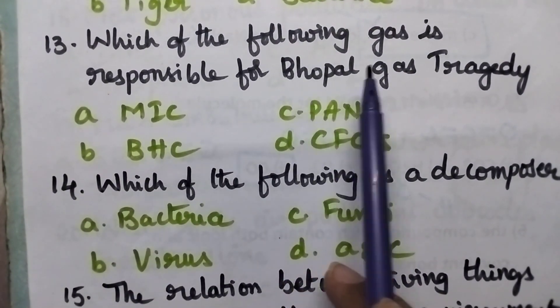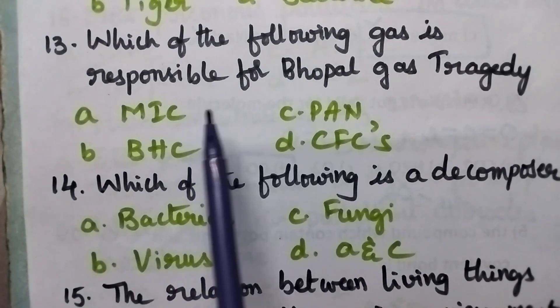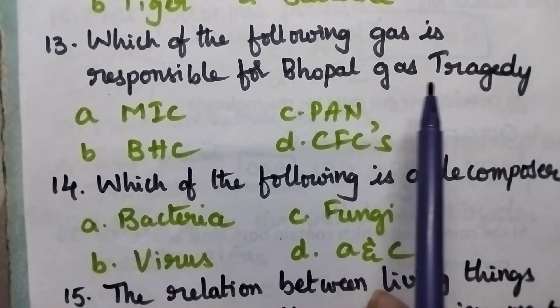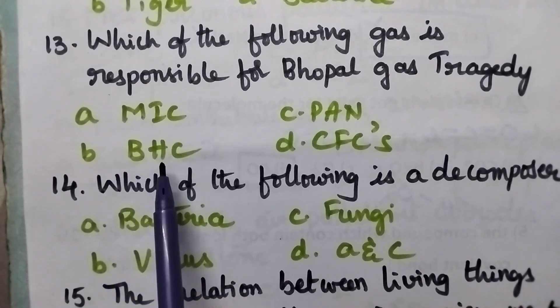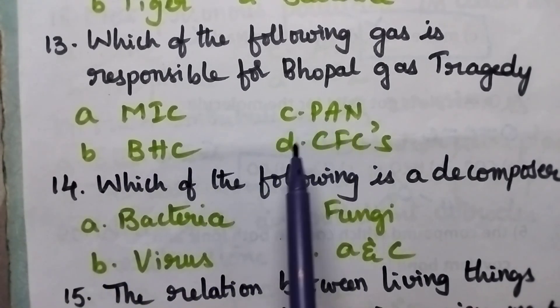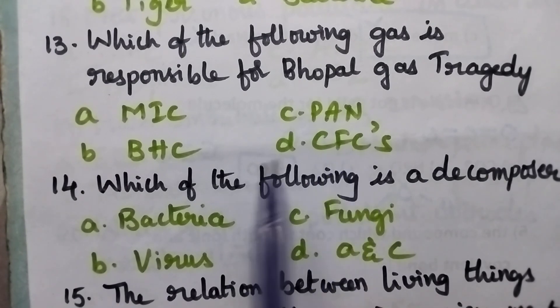Which of the following gas is responsible for Bhopal gas tragedy? A: MIC, B: BHC, C: PAN, D: Chlorofluorocarbons.